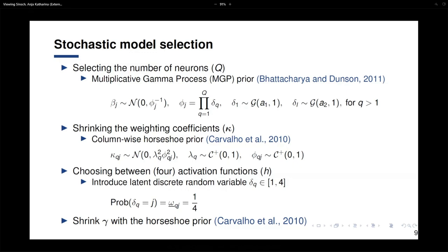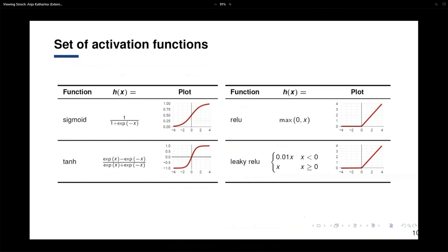With an increasing number of neurons, we get more shrinkage. We also shrink the nonlinear coefficients kappa and the linear coefficients gamma using a horseshoe prior. We then choose among activation functions by placing a prior on them — introducing a latent discrete random variable delta — and sample the activation function within our MCMC loop. We choose a set of four popular activation functions from the deep learning literature: Sigmoid, ReLU, Tanh, and Leaky ReLU.